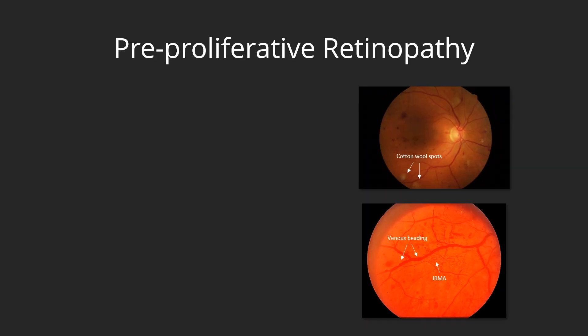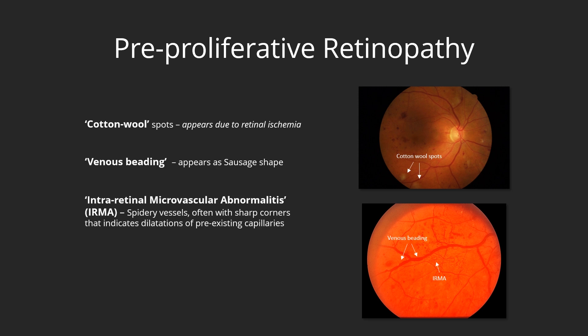Pre-proliferative diabetic retinopathy. As diabetic retinopathy progresses and there is continuing capillary hyperperfusion, cotton wool spots, venous beading, and intraretinal microvascular abnormalities can be seen. Cotton wool spots, which are also sometimes called soft exudates, are the infarcted areas in the nerve layer. This stage is referred to as pre-proliferative diabetic retinopathy. The disease, if not controlled here, may progress to the proliferative stage.